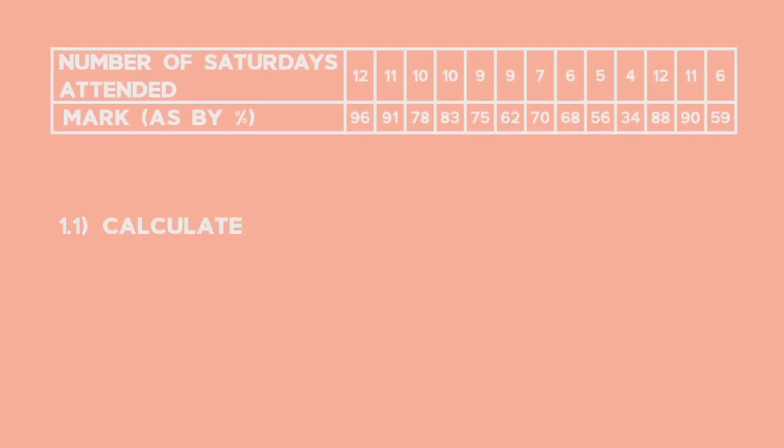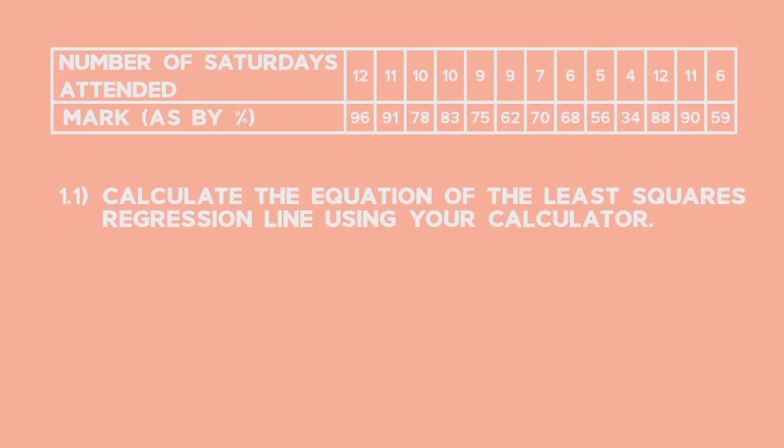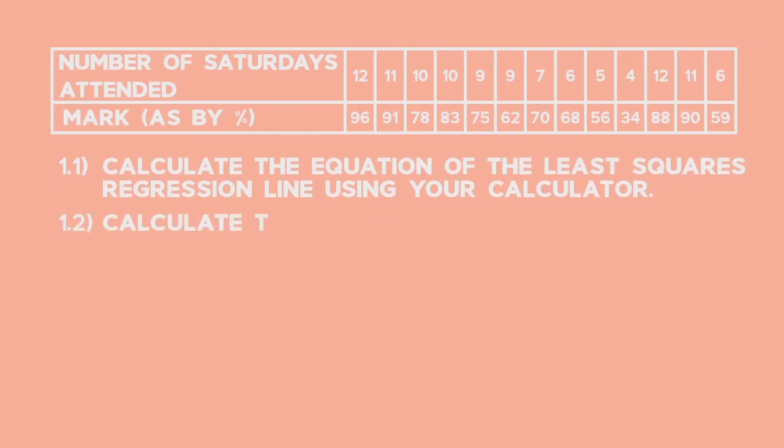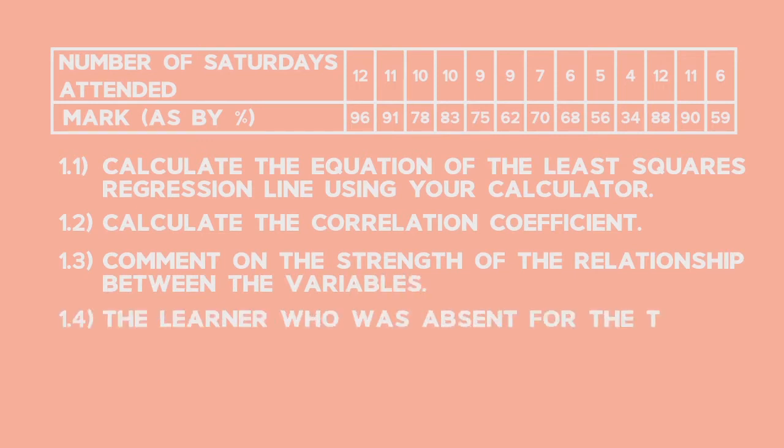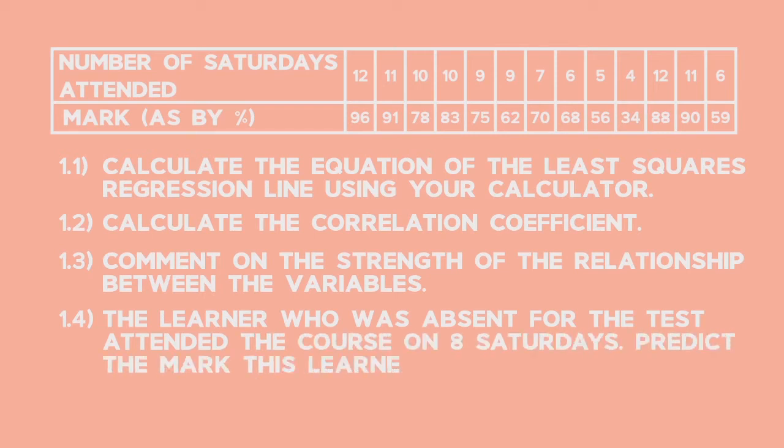1.1 Calculate the equation of the least squares regression line using your calculator. 1.2 Calculate the correlation coefficient. 1.3 Comment on the strength of the relationship between the variables. 1.4 The learner who was absent for the test attended the course on eight Saturdays. Predict the mark this learner would have scored for the test.